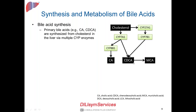CDCA can also be synthesized through an alternative pathway that does not involve CYP7A1. Within the liver, CDCA can be further hydroxylated to form muricholic acid. These bile acids formed within the liver — synthesized from cholesterol — are called primary bile acids.